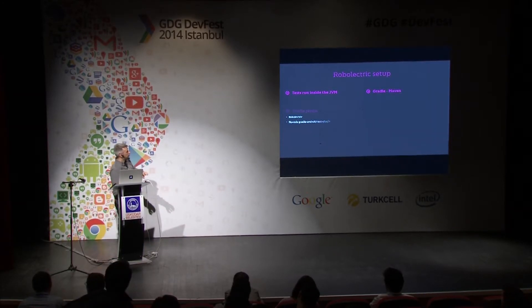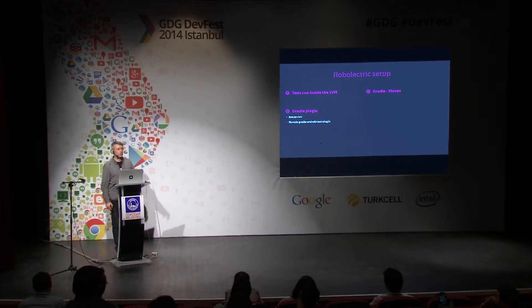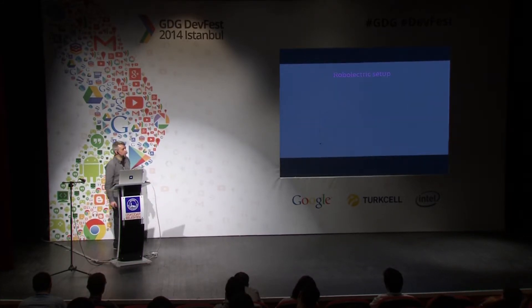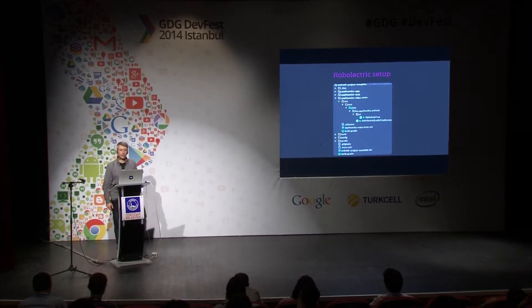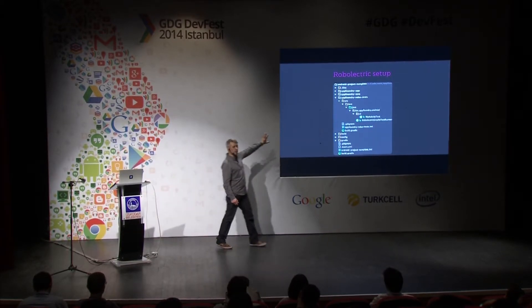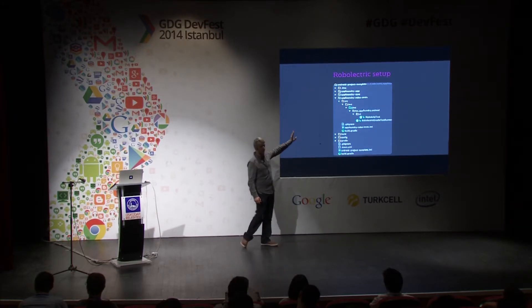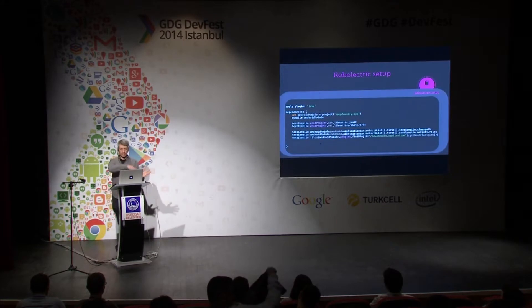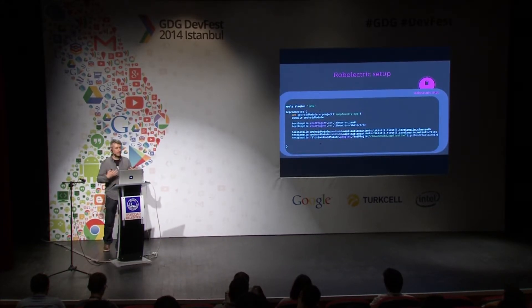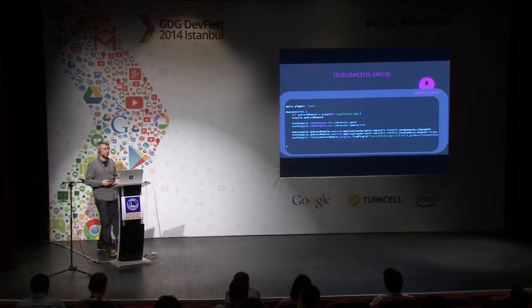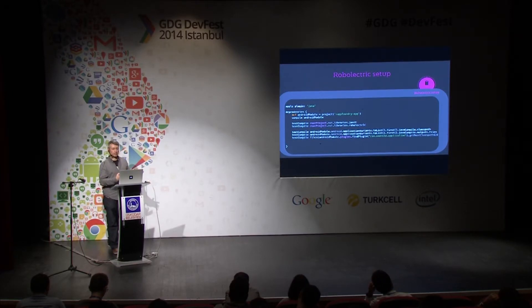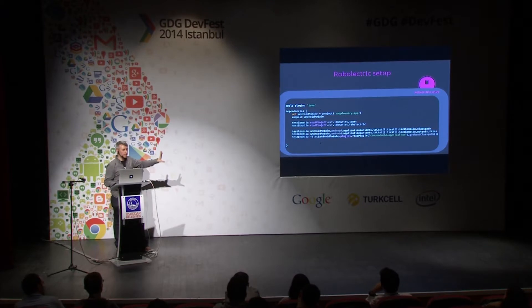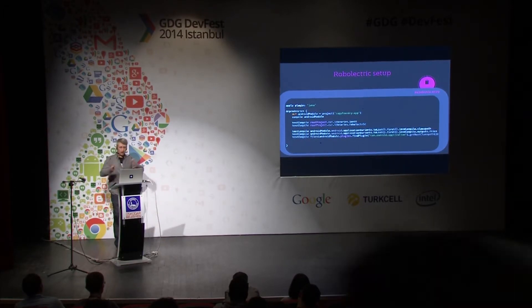For our project, we really do a combination of both. We have a big chunk of tests running in a Robolectric setup — it's super fast, works very well, and all the Java developer tools you know are available because in the end it's just a Java project. A second part, more scenario-based testing, is done in Espresso. For setup, you have Gradle or Maven plugins, but we configure it ourselves — I've included a link to a helpful blog. I've split out all my Robolectric tests into a separate module called RoboTests, giving me more control.